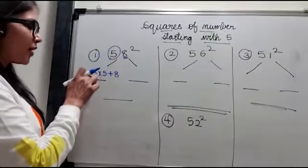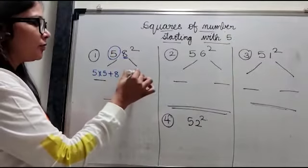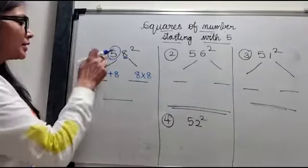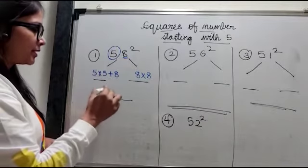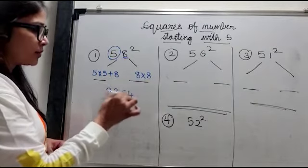Multiply. So that's 5 square plus the units digit. And on the second half you will have the square of 8, that is 8 into 8. This is 25 plus 8 is 33. 8 times 8 is 64. That's my answer.